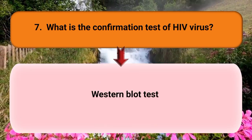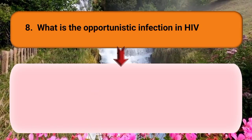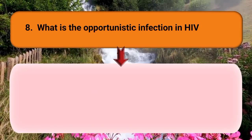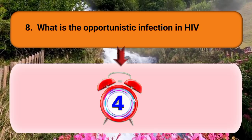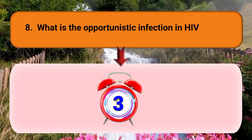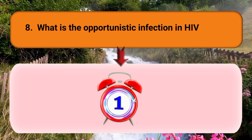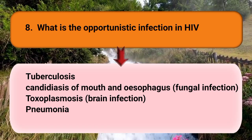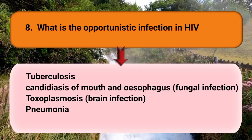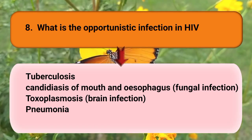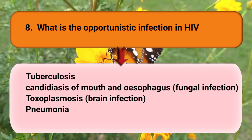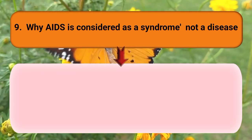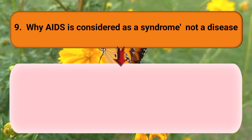What is the confirmation test for HIV virus? The answer is the Western blot test. What are the opportunistic infections in HIV? The answer is tuberculosis, candidiasis of the mouth and esophagus, toxoplasmosis, and pneumonia.